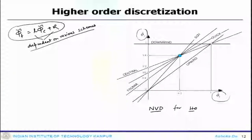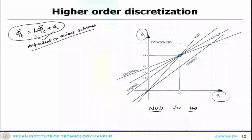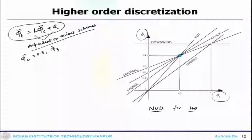Here is your upwind scheme, this is your central scheme, this line is the QUICK scheme, this is the FIRM scheme, this is the second order upwind scheme, and this is the downwind scheme. All schemes form a flat straight line, and the meeting point is phi_c_tilde equals half and phi_f_tilde equals 3 by 4.